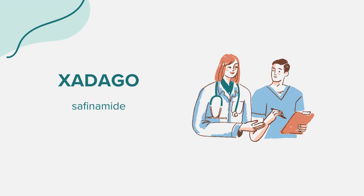It's crucial to avoid certain medications 14 days before and after taking Xadago, such as amphetamines, certain cough medicines, and other MAO inhibitors. Before starting Xadago, inform your doctor if you have a history of liver disease, blood pressure issues, mental health disorders, unusual urges, eye problems, or sleep disorders.